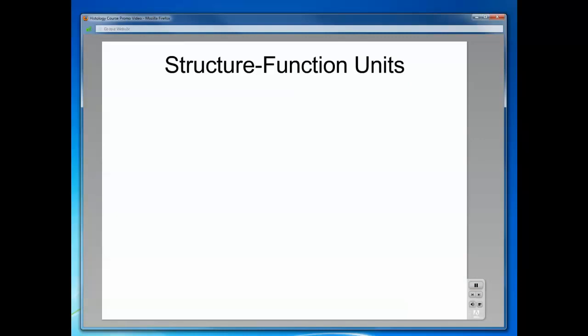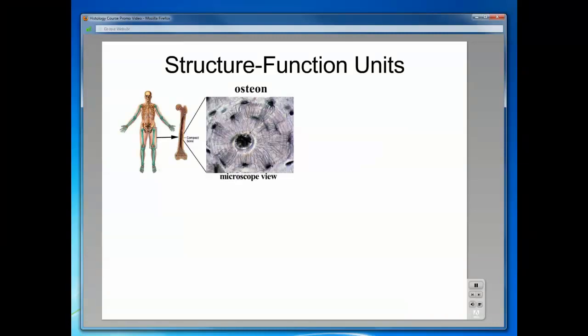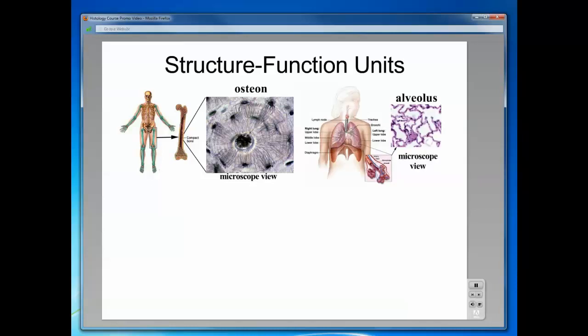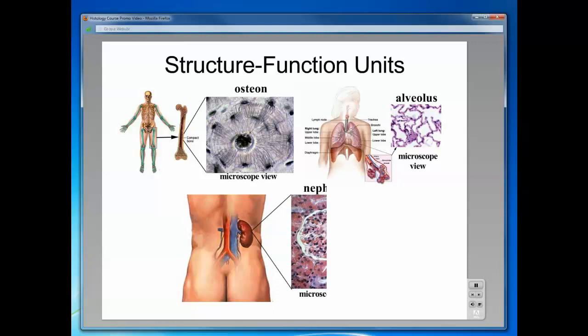The microscopic architecture of the human body is designed so that each organ has structure-function units — structures designed to carry out the primary function of that organ. Three examples are the osteons of your bones, without which you cannot stand up; the alveoli of the lung, without which you cannot breathe; and the nephron of the kidney, without which you would not be able to rid your body of waste products. As you reflect on histology, think about all the structure-function units you have learned in this course.